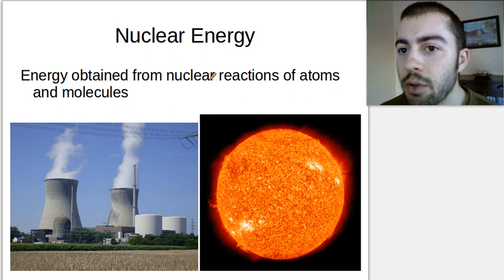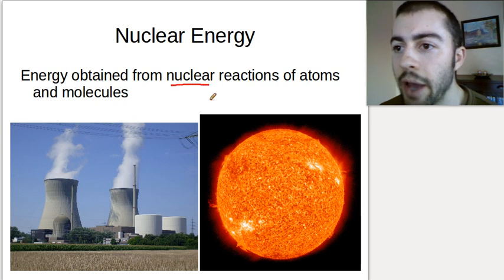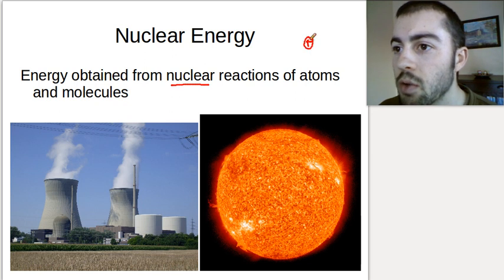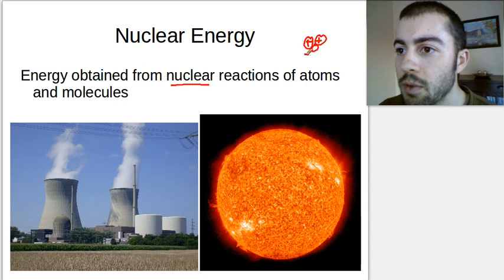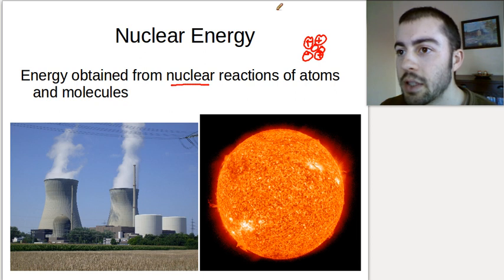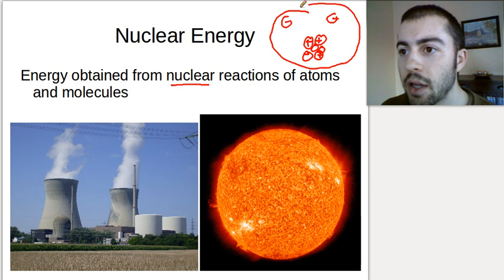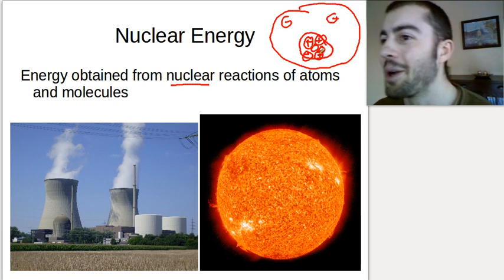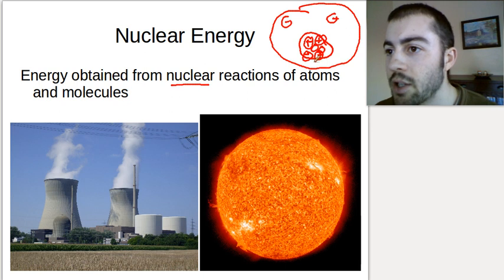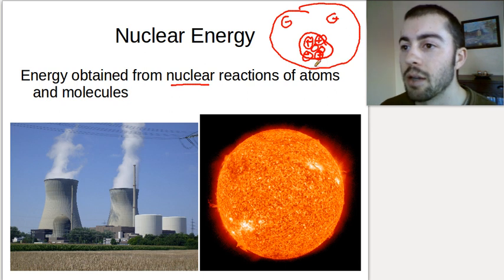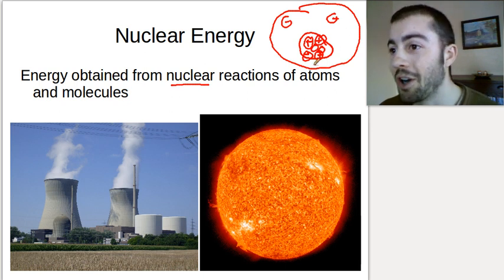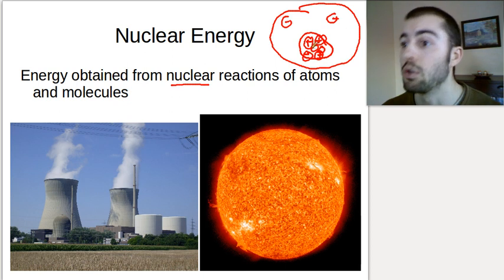Nuclear energy comes from nuclear reactions of atoms and molecules. In atoms, we have the nucleus made up of protons and neutrons, and around the nucleus is an electron cloud. A nuclear reaction has to do with the nucleus of an atom. If we split the nucleus — which is really hard to do and takes a lot of energy — it releases a lot of energy. Nuclear reactions are very, very powerful.